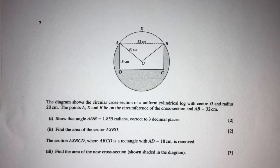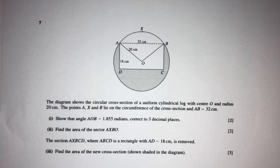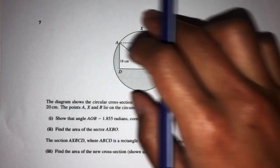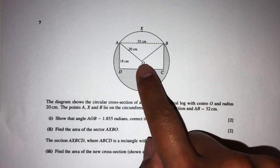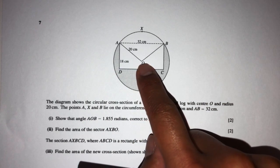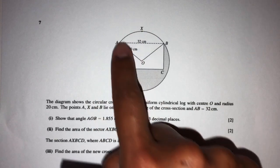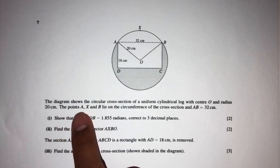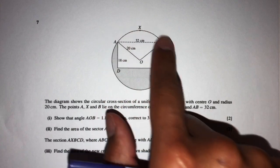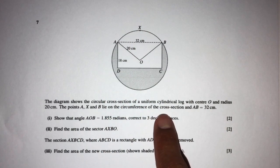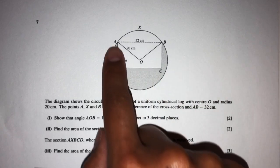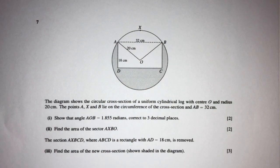For this question, the diagram shows a circular cross-section of a uniform cylindrical log with center O and radius 20 centimeters. So we have a circle, center O, and radius 20 — those are the given information. Points A, X, and B lie on the circumference of the circle, and AB is 32.